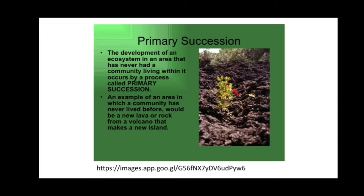Primary succession is the development of an ecosystem in an area that has never had a community living within it. An example of such an area would be new lava rock from a volcano that creates a new island — a place where no community has ever existed before.